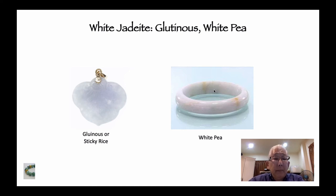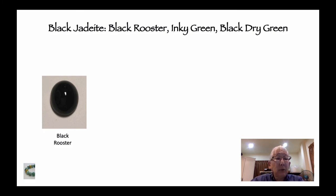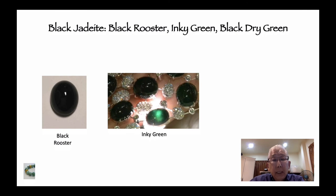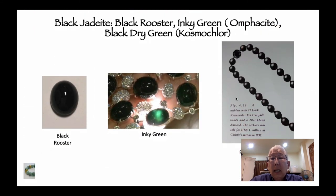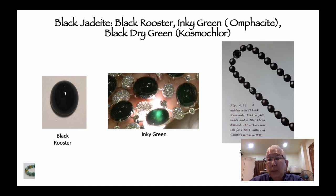This is glutinous white pea jadeite — it's like sticky rice. Here's white pea, which is white jadeite. Then we have black jadeite — the black rooster, which is almost solid black. Then you have inky green, which looks black but may have a shade of green. Once you put a torchlight behind it you can see the green. This contains omphacite, part of the Fei Shui family of jadeite along with cosmochlor. We just purchased a bunch of these bee pieces — clearly jadeite but without that shininess. This is black dry green jadeite — but these are gorgeous.